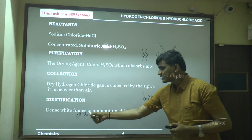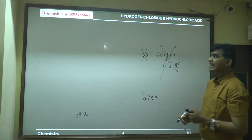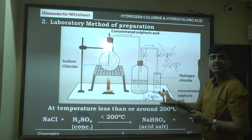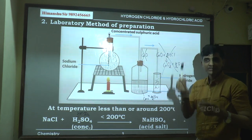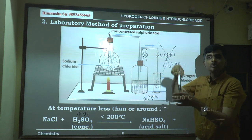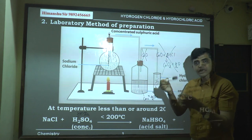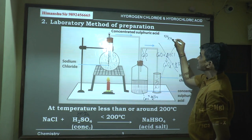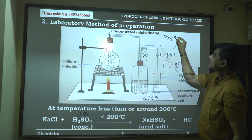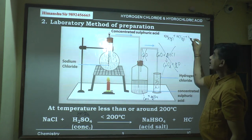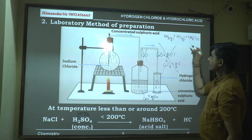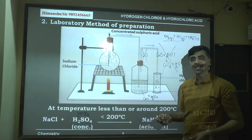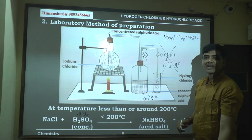To identify that the gas prepared is HCl: take a glass rod dipped in ammonia solution and bring it near the gas jar containing HCl. Ammonia is a basic gas that combines with HCl, which is an acidic gas, to form NH4Cl (ammonium chloride), which is a solid. This is the only reaction in the syllabus where combining two gases produces one solid — dense white fumes of ammonium chloride are observed.